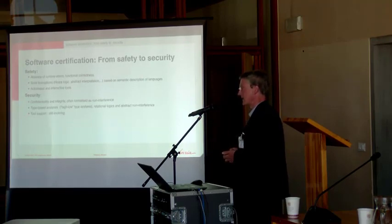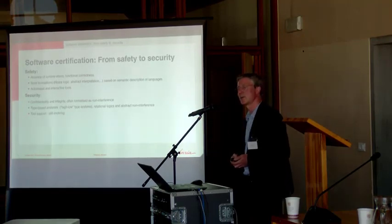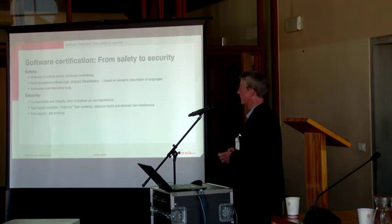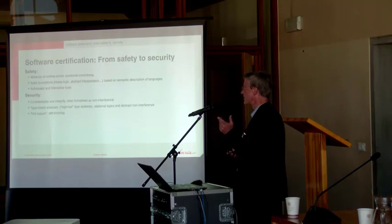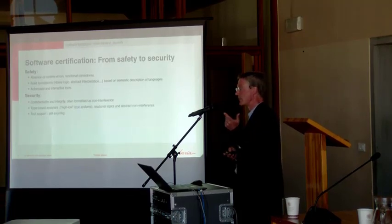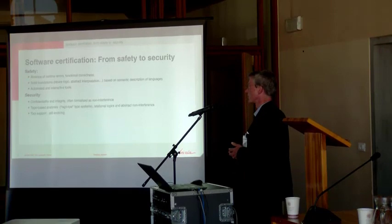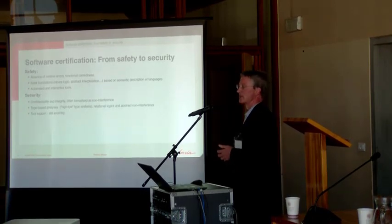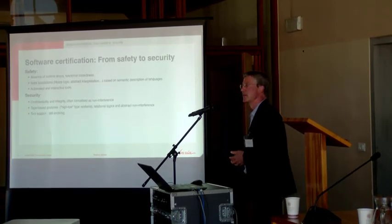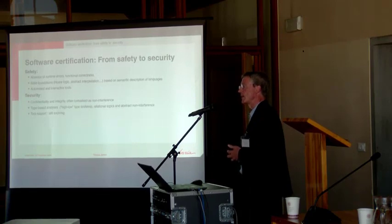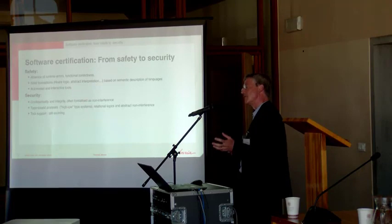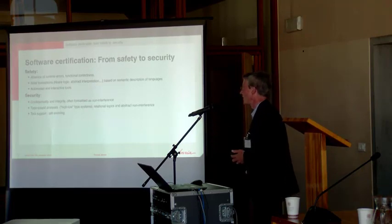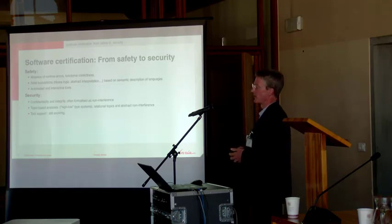When it comes to security, there are different kinds of properties that security people focus on. They have three properties: confidentiality, integrity, and availability. Focusing on confidentiality and integrity, the question is whether information considered private is protected — not being sent out to the internet — and dually, whether information on which important decisions are based can be trusted. This is quite often formalized as some kind of non-interference property.